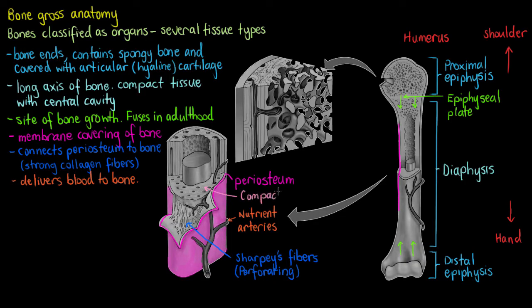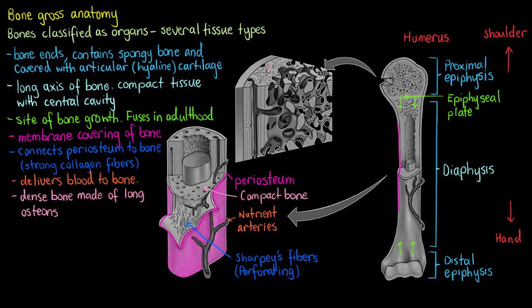Looking at a close-up of the compact bone in the diaphysis: compact bone is much denser and is made out of long units of bone called osteons, or Haversian systems. The Haversian systems are quite complex and will be covered in a later video. These osteons are long units that stretch along the length of the bone.